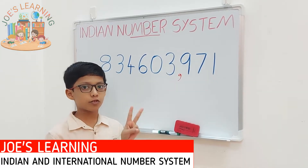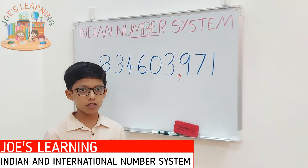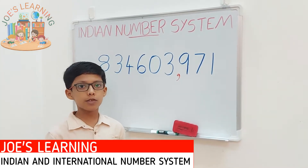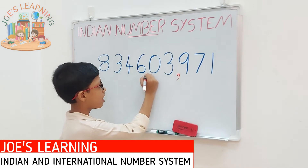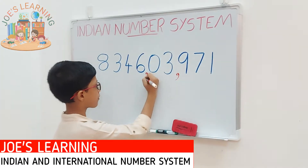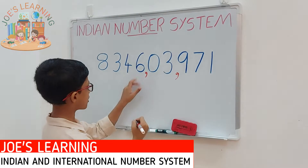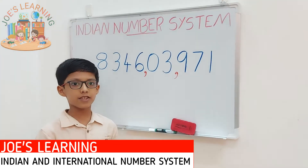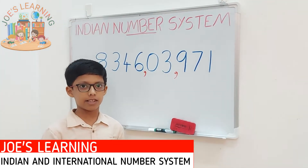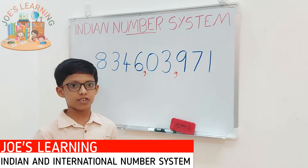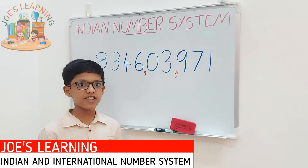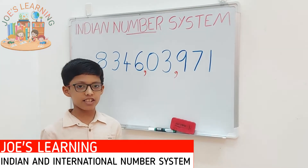The thousands period consists of two places: the thousands place and the ten-thousands place. So we put a comma after these two digits to separate it from the rest. Now the next period is called the lakhs period. The lakhs period consists of two places: the lakhs place and the ten-lakhs place.